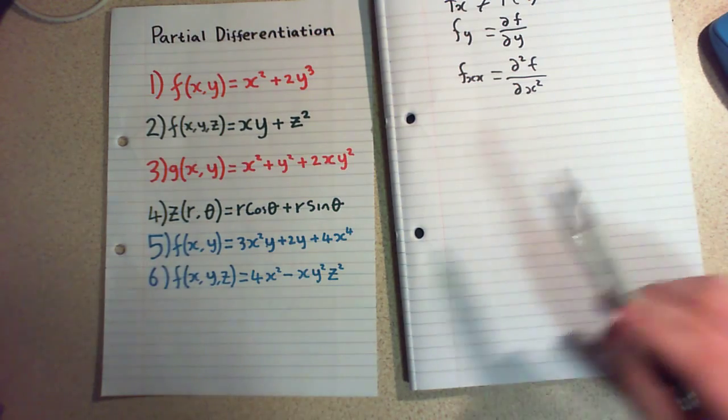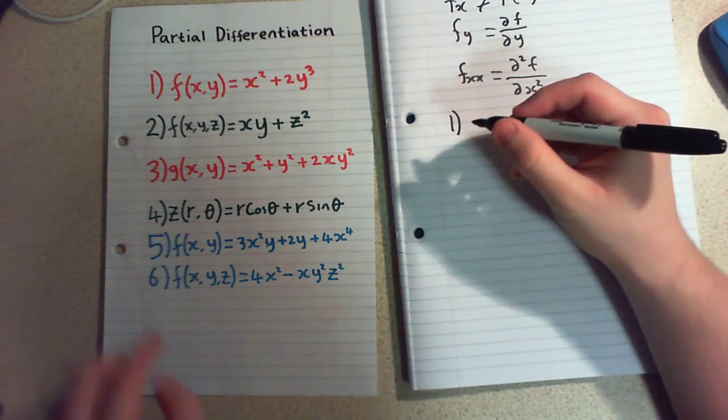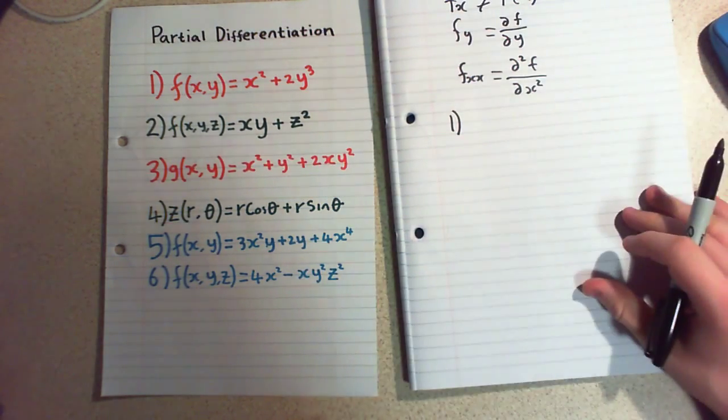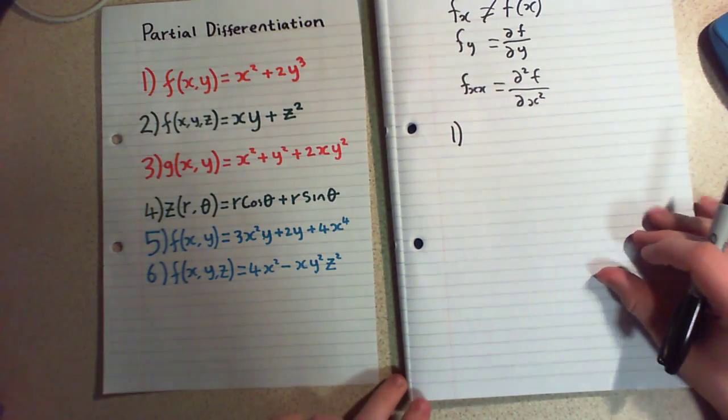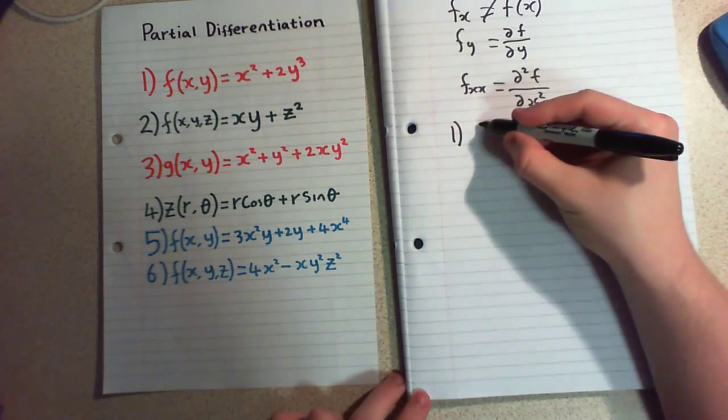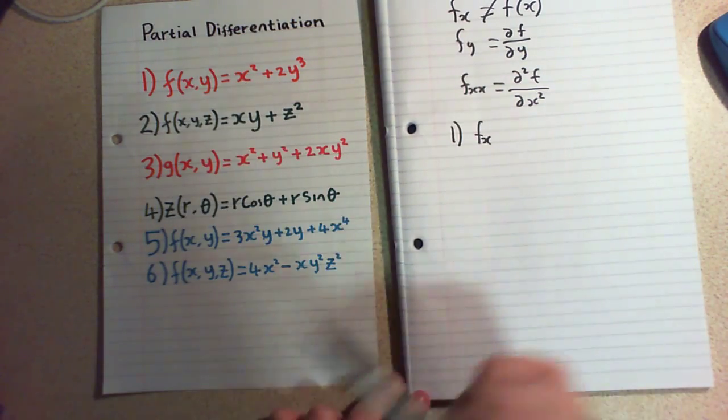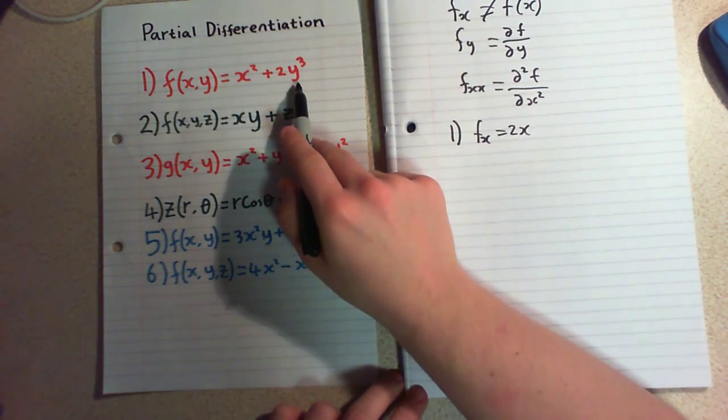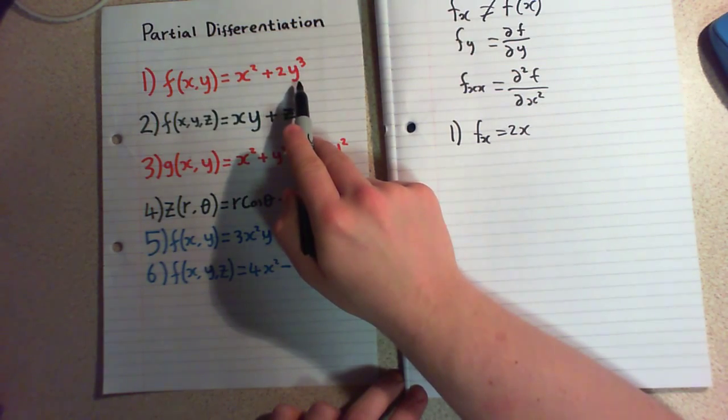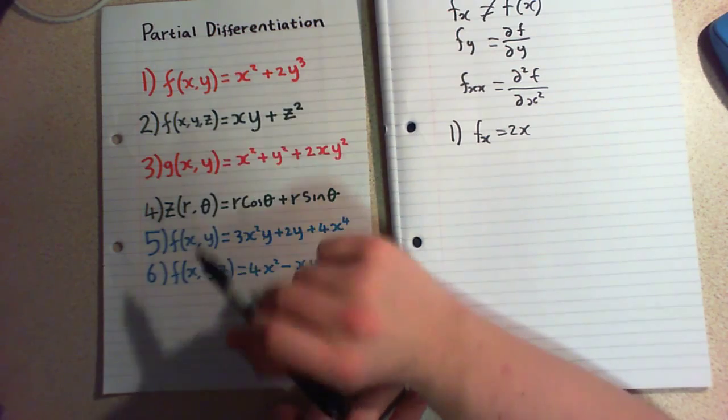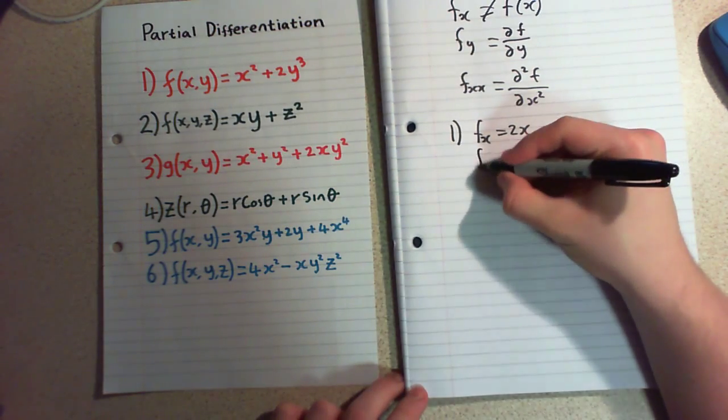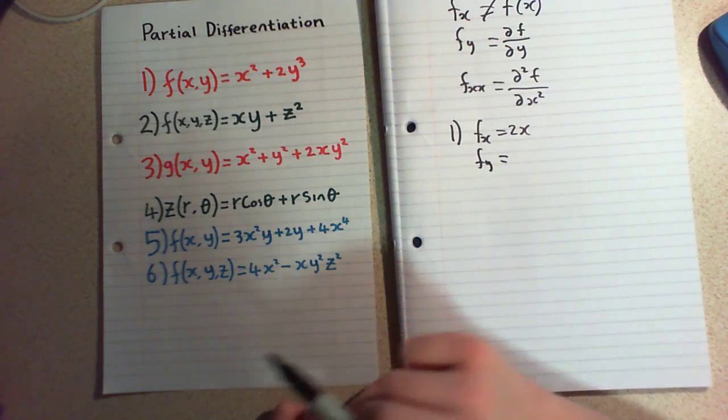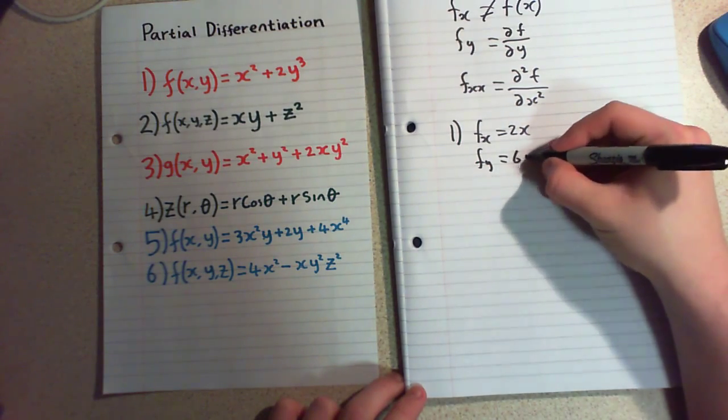So first we're going to start with question one. For question one we're going to differentiate first with respect to x. And we differentiate our x term normally then. There's no problems there. And then our y term. Now when we differentiate with respect to x, y gets treated as a constant. Which means y cubed is just going to disappear. So all of this is a constant here and it all goes. So we can differentiate now with respect to y. Now our x part is a constant. So that disappears and we just differentiate our y like we would normally. Which is of course just going to be 6y².